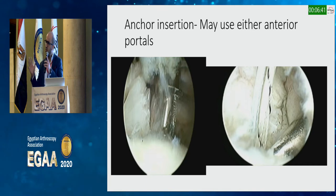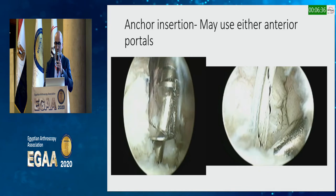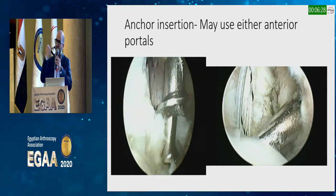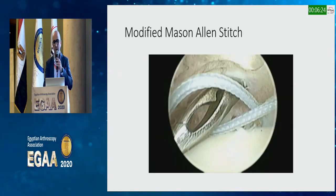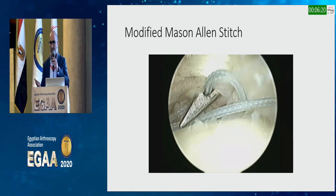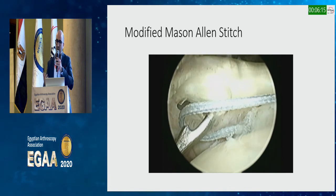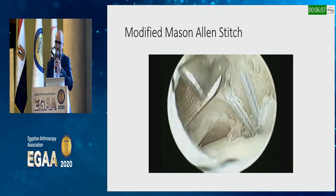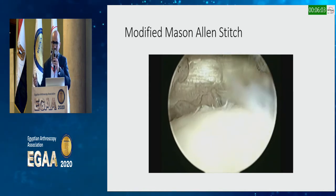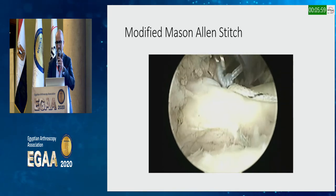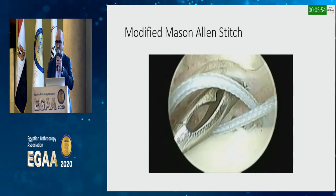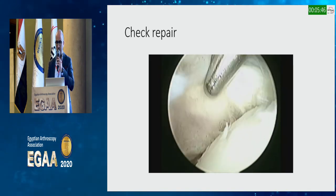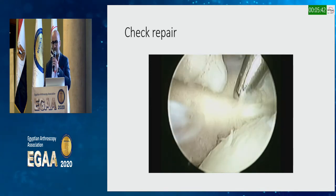For anchor insertion, you can insert anchors from either the anterior or antero-lateral portals. I pass sutures using a modified Mason-Allen technique — two horizontal mattress sutures through one anchor using one suture, and then a simple suture using the other suture, medial to the horizontal mattress. When tying knots, start with the mattress suture first to reduce the tear, then the simple suture. The result is the subscap completely fixed to its footprint with the rolled upper edge clearly visible.